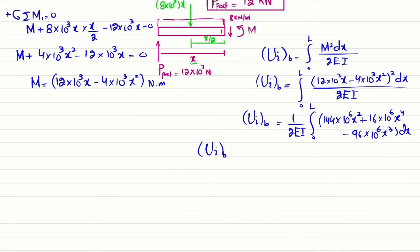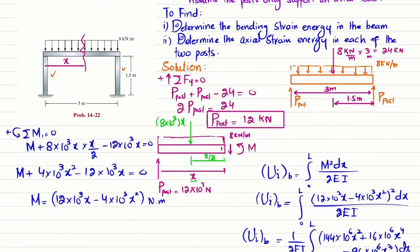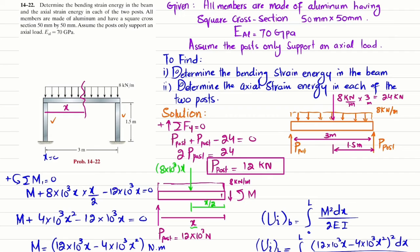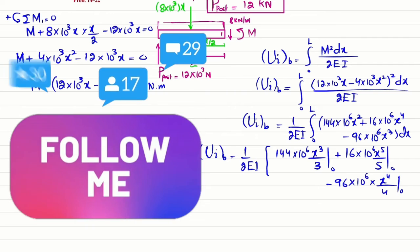The bending strain energy equals (1/2EI) times the integral evaluated term by term: 144×10⁶·(X³/3) + 16×10⁶·(X⁵/5) − 96×10⁶·(X⁴/4), with limits from 0 to 3 meters (the total beam length L = 3 m).